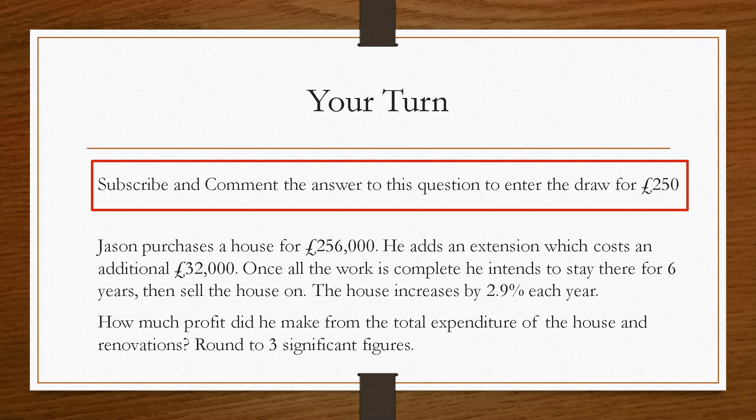So the question here says that Jason purchases a house for £256,000. He adds an extension which costs an additional £32,000. Once all the work is complete, he intends to stay there for 6 years and then sells the house. The house is to increase by 2.9% each year. How much profit did he make from the total expenditure of the house and the renovations? Round to 3 significant figures.